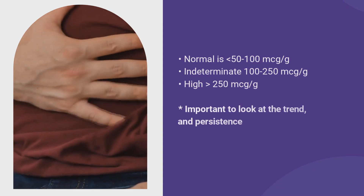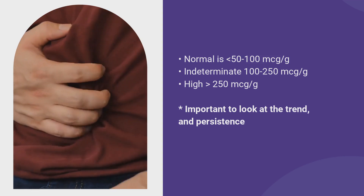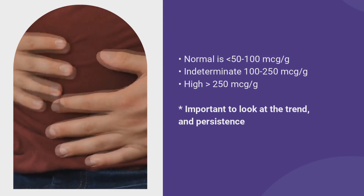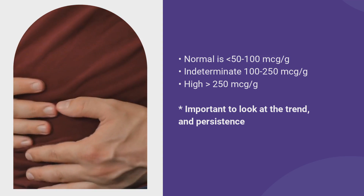Fecal calprotectin is a stool test measured as a concentration, reported in micrograms per gram of stool. A normal value is less than 50 to 100 micrograms per gram. Values between 100 and 250 are in an indeterminate zone — potentially relevant but not conclusive. When it's greater than 250, we're pretty confident there is active intestinal inflammation.